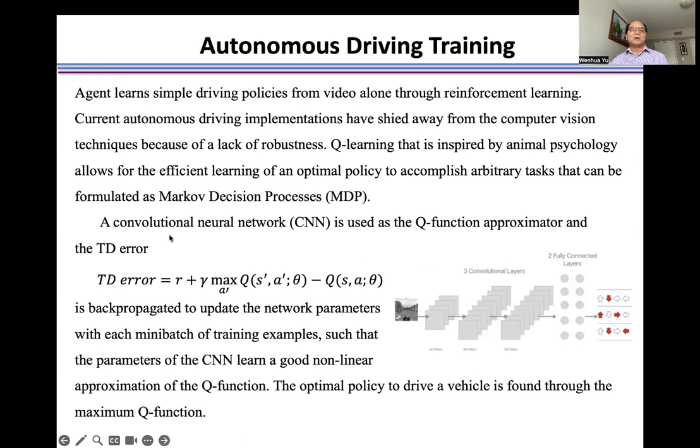First, we use a convolutional neural network as a Q-function approximator, and then we define the TD-error as two terms: one is a target,